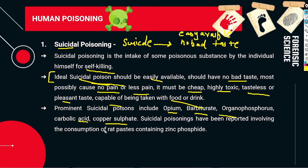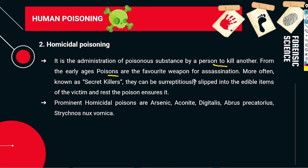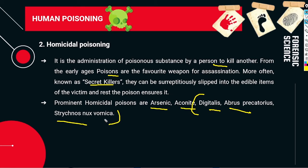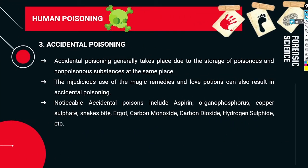Homicidal poisoning is the administration of poison by one person with the intent to kill another. From early ages, poisons have been a favorite weapon for assassination — often known as 'secret killers.' Common agents used in homicidal poisoning include arsenic, aconitine, digitalis, Abrus precatorius, and Strychnos nux-vomica. These plant poisons are easily available and can be mixed with food or drinks.